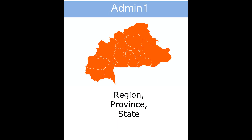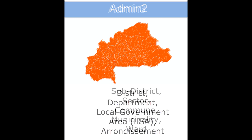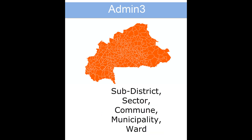Admin 1 most commonly refers to regions, provinces, or states. Admin 2 most commonly refers to districts, departments, local government areas, or LGAs, or arrondissements. Admin 3 most commonly refers to subdistricts, sectors, communes, municipalities, or wards.